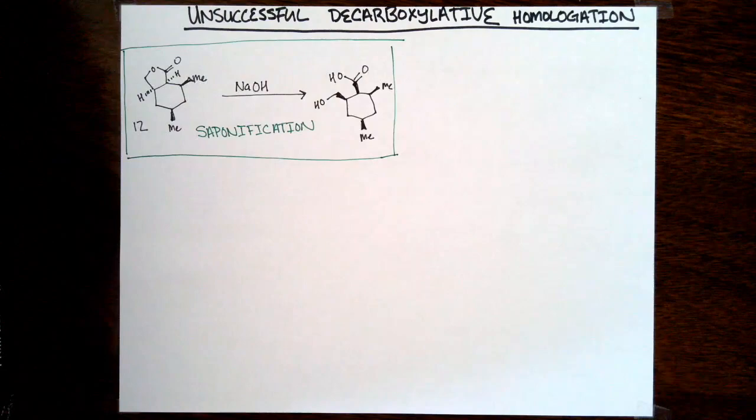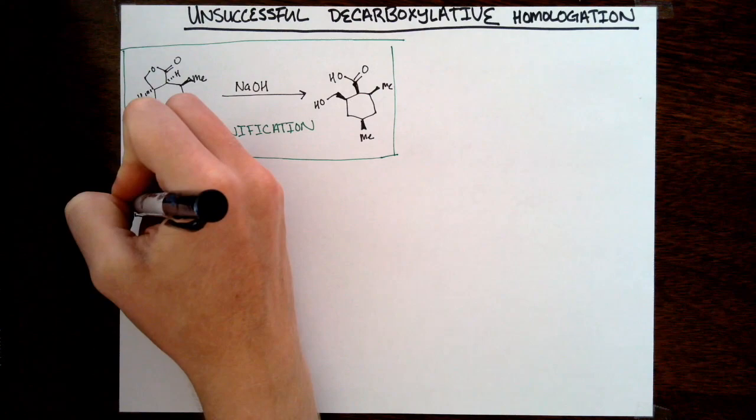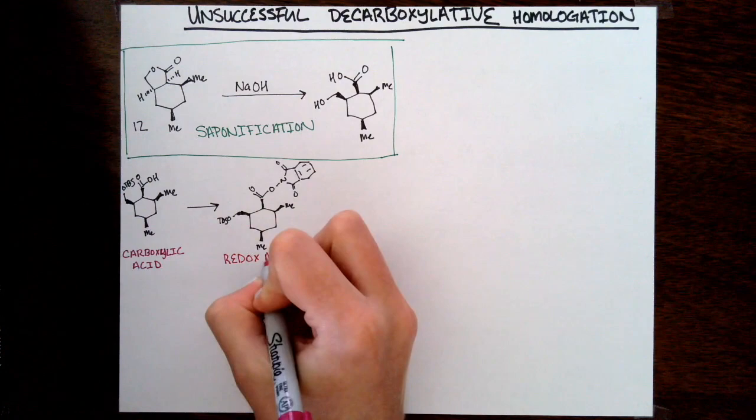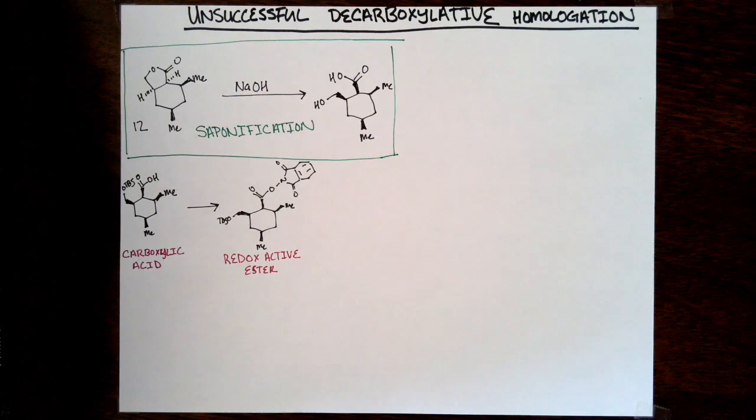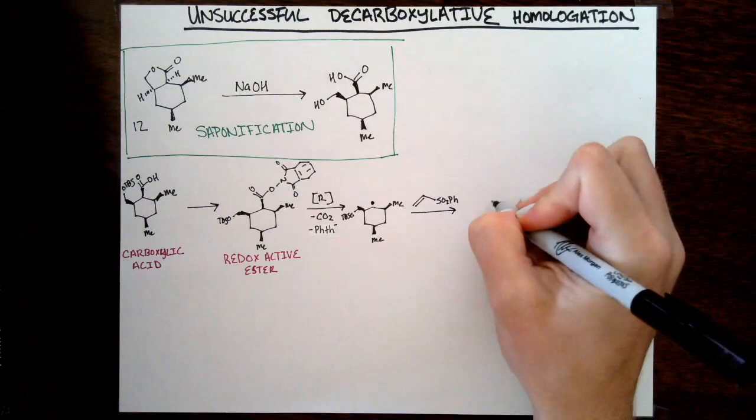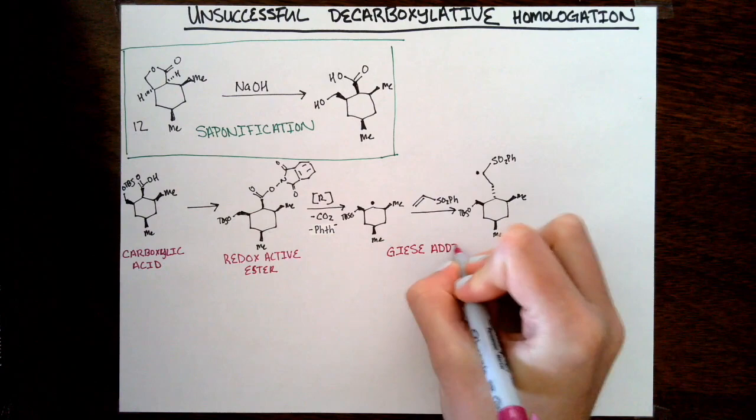What they wanted to do initially was take the cyclic lactone they had made, subject it to base to do a saponification that would reveal the carboxylic acid, and they initially wanted to try to do a decarboxylation under reductive conditions. This is some classic Barron chemistry to convert that carboxylic acid to an NHP ester. The idea is to make this carboxylic acid easily reducible.